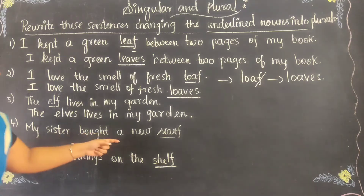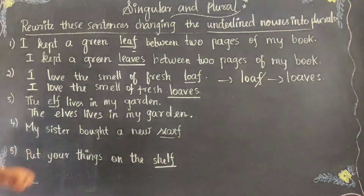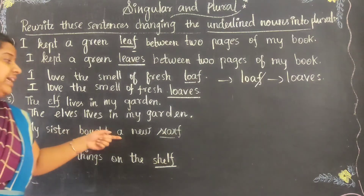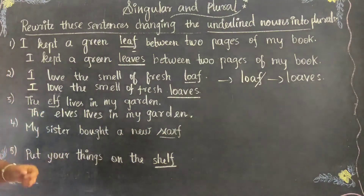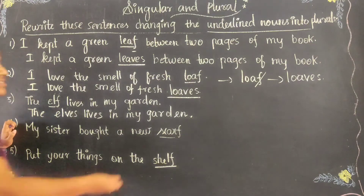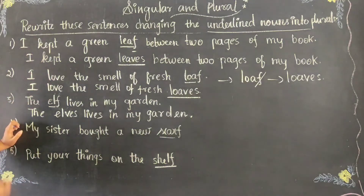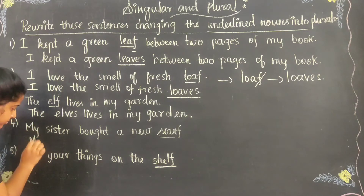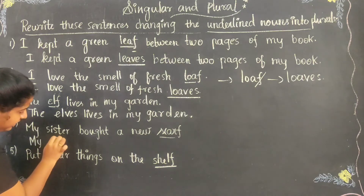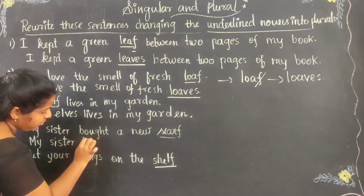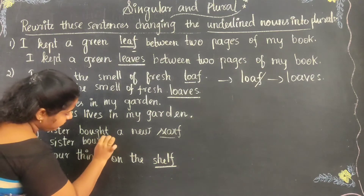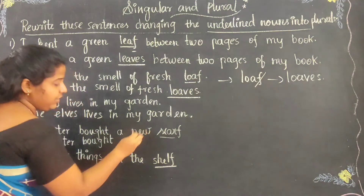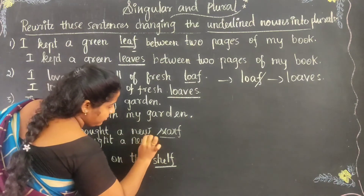Fourth sentence: My sister bought a new scarf. Scarf is the underlined word. The word ends with F. You have to drop that F and then add V-E-S. So it changes into scarves. My sister bought a new scarves.